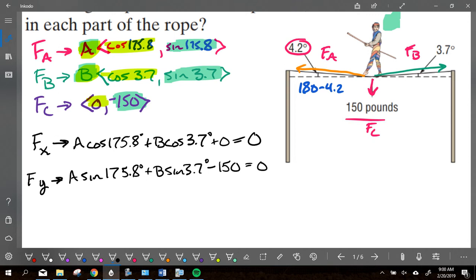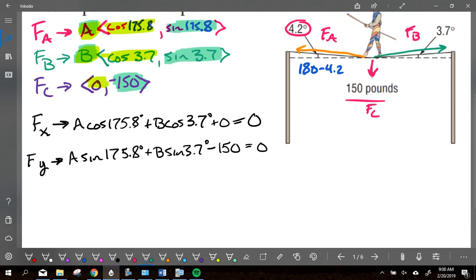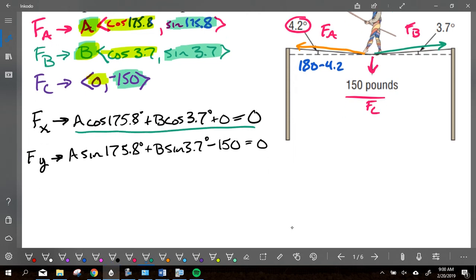It is now just a solving question. It's not your favorite solving question, but it's solving. You have two equations. You have two variables. Elimination substitution. So you can set this up however you want. I'm going to go fairly quick here and work this way through it. So I'm going to take this equation right here and solve. A cosine 175.8 is going to be equal to a negative B cosine of 3.7.